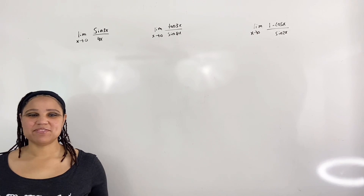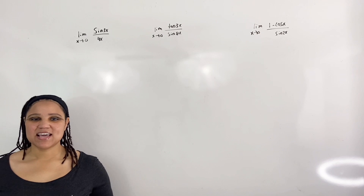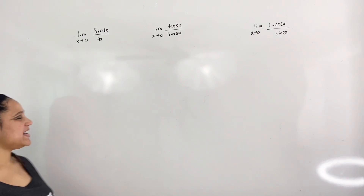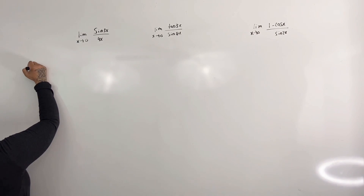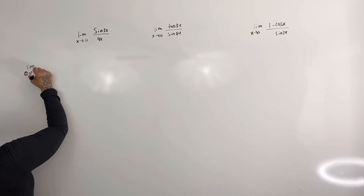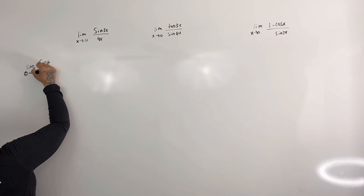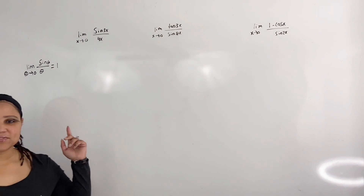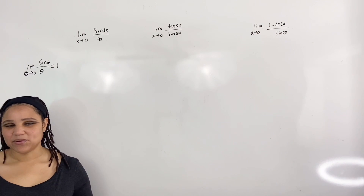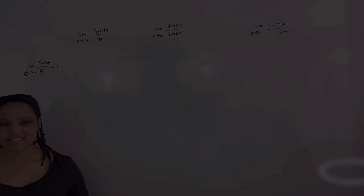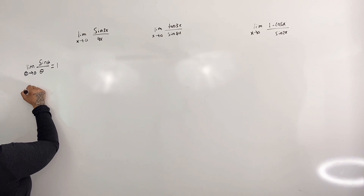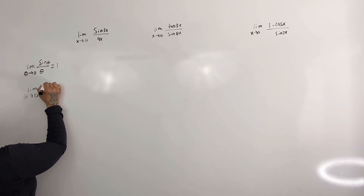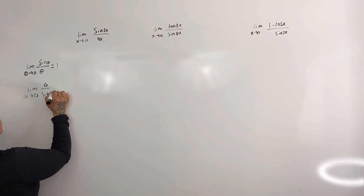In this video, we are going to evaluate limits of trig ratios. I will use the limit of a trig ratio that has already been proven. Recall that the limit as theta approaches 0 of sine theta over theta is equal to 1. I have already proved this limit in a previous video, so if you're interested, be sure to check that out. We also know that the limit as theta goes to 0 of theta over sine theta is equal to 1.